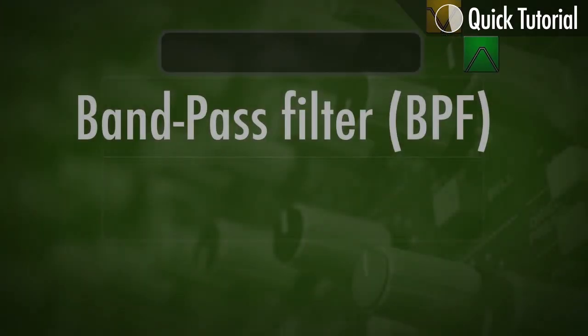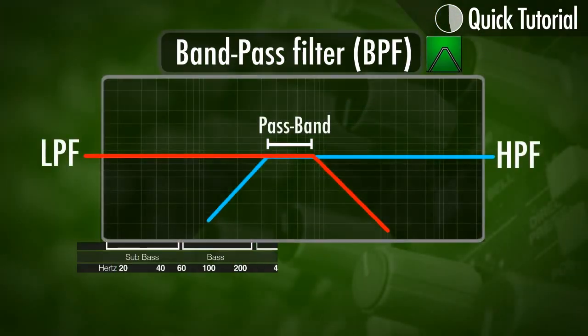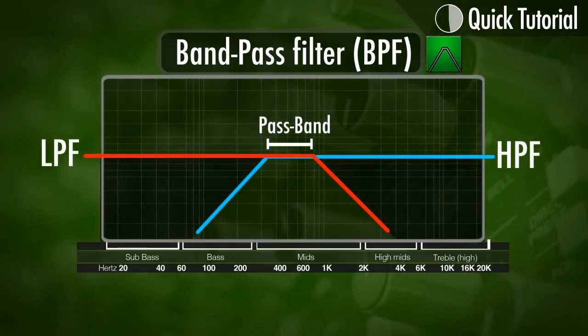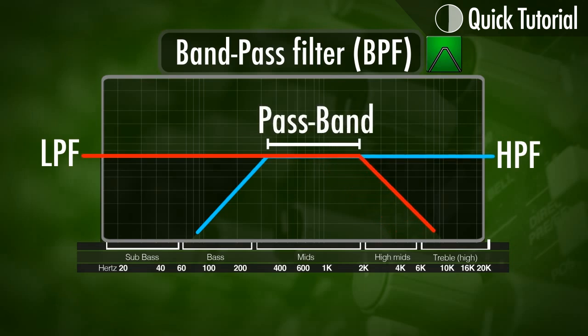A band pass filter allows a certain band of frequencies to pass, so it removes the frequencies below and above that frequency band. This could be used to create a telephone-like effect.